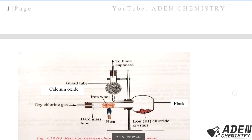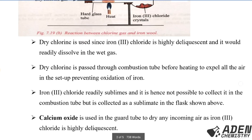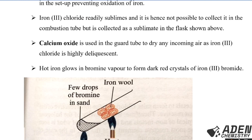Calcium oxide is placed in the guard tube to dry any incoming air, since iron(III) chloride is highly deliquescent. Anhydrous calcium chloride can also be used in place of calcium oxide, as both act as drying agents and remove moisture from incoming air.